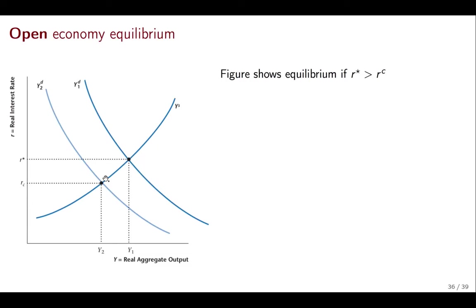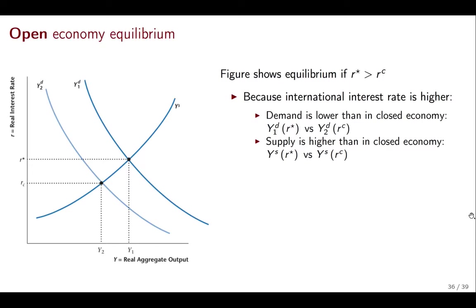In an open economy equilibrium, the interest rate can be, for example, higher than the closed economy interest rate RC. Y2 would be the demand in the closed economy — RC and Y2 are the output and interest rate you would have in the closed economy, basically the same ones from the previous slide. But the international interest rate is higher and so is output, because there is higher output supply at that point. Two things happen because the interest rate is higher: first, demand is lower compared to the closed economy; you can see that in the difference between how much is demanded at this higher interest rate and how much is supplied. Second, supply is higher because the interest rate is higher — you're moving upward along this curve.